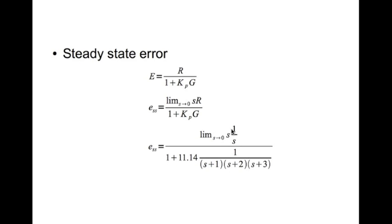As this tends to 0, this s cancels with this s. These s's go to 0. Therefore, steady state error is 1 divided by 1 plus 11.14 divided by 6, which is around 0.35. Now remember that my steady state error requirement required me to have a steady state error of 0, so this doesn't satisfy.